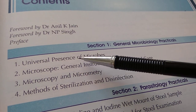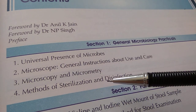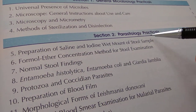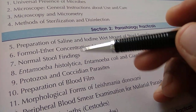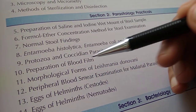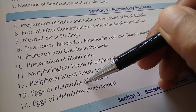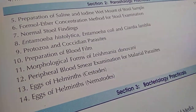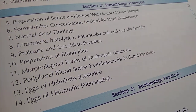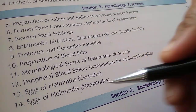General Microbiology, Microscope, Sterilization, Disinfection. Parasitology is there directly — Stool Concentration, Protozoa, Blood Film. How will you see the eggs of helminths — Nematodes, Cestodes, Nematodes? Morphological Forms of Leishmania Donovani.